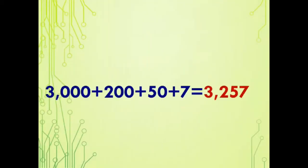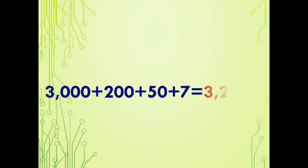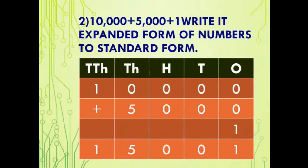So, standard form is the reverse of expanded form. When 3,000 + 200 + 50 + 7 are added together, we get 3,257. We read it as three thousand two hundred and fifty-seven. Next example: 10,000 + 5,000 + 1 — write it in expanded form of numbers to standard form.